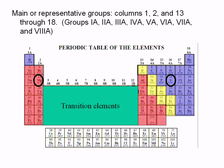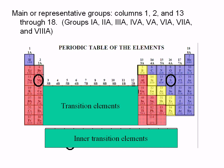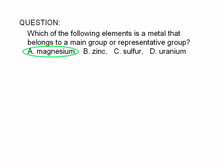Finally, here's uranium. It is in what we know as the actinide series. It is an inner transition element. The correct answer is magnesium.